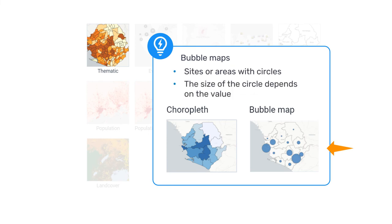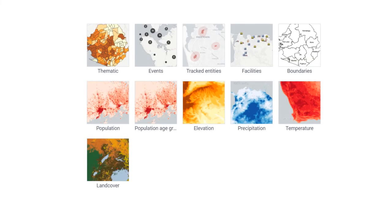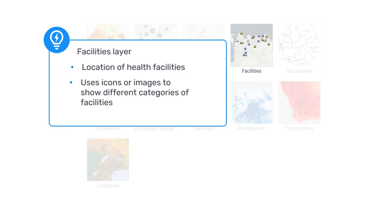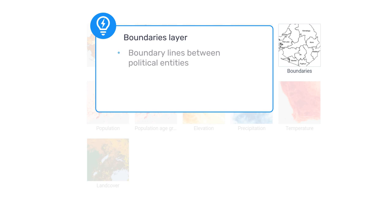The size of the circle depends on the value associated with that particular location. Locations with larger values have larger circles, while locations with smaller values have smaller circles. The facilities layer shows the location of health facilities with different icons or images to show different categories of facilities, such as health centers or dispensaries. The boundaries layer displays the boundary lines between political and administrative entities, such as countries, regions, or districts.